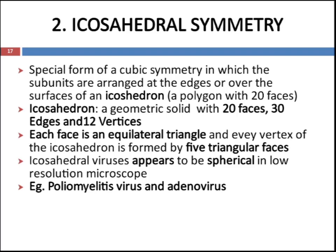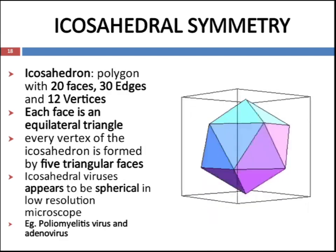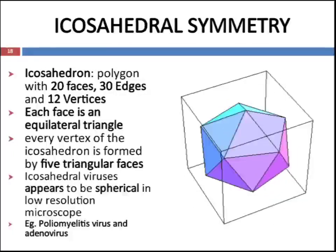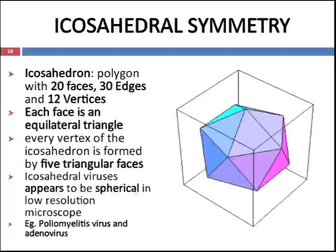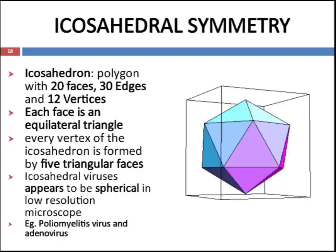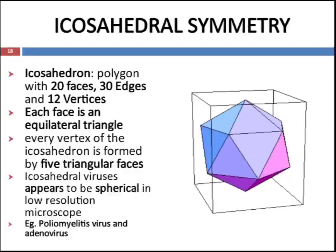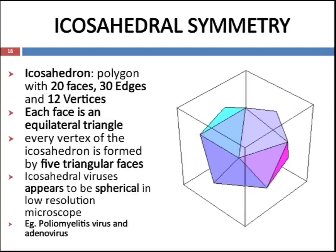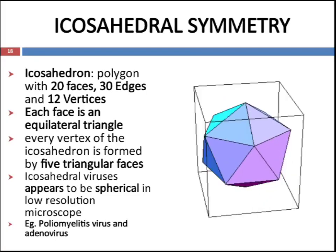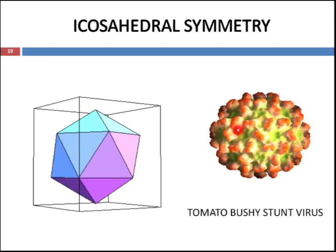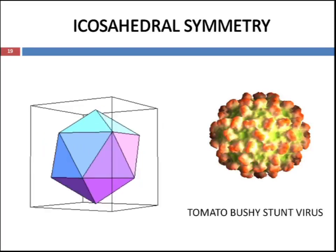The second symmetry is icosahedral symmetry — a special form of cubic symmetry in which subunits of capsomeres are arranged at the edges or over the surface of an icosahedron. An icosahedron is a polygon with 20 faces, 30 edges, and 12 vertices, and each face is an equilateral triangle. Every vertex of an icosahedron is formed by five triangular faces. Icosahedral viruses appear spherical under low resolution microscopy. Examples include poliovirus, adenovirus, and tomato bushy stunt virus.